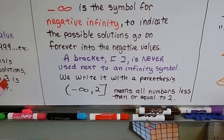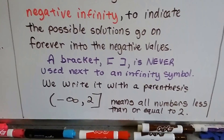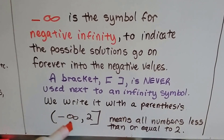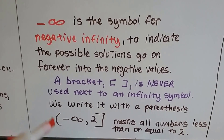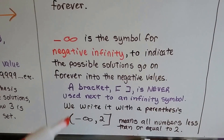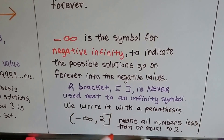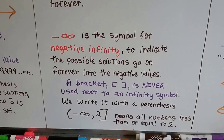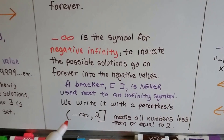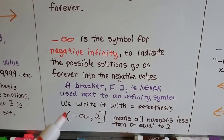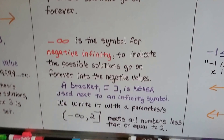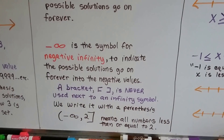A bracket is never used next to an infinity symbol — we write it with a parenthesis next to it. Look at it this way: the infinity symbol has a nice pretty curve to it, so it wants to have a nice pretty curve next to it. Even the positive one has a nice pretty curve next to it, so we want to put a nice pretty curve next to it — we don't want to put a boxy, sharp-cornered bracket next to it. So a parenthesis is always next to an infinity symbol. But remember, the parenthesis also means 'not included' — in this case, that doesn't have any bearing; it just means it's next to an infinity symbol.